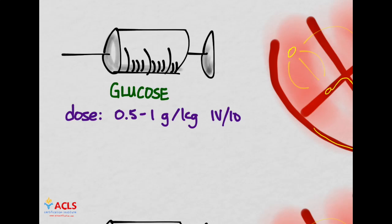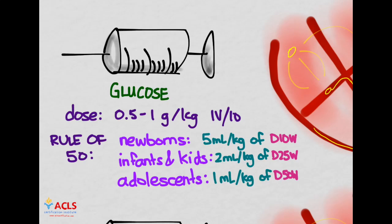The dose of glucose is 0.5 to 1 gram per kilo given IV or IO. There's an easier way to remember that called the Rule of 50s. You give a different dose based on whether they're newborns, infants, or adolescents. For newborns, 5 mLs per kg of D10 water. Infants and kids, 2 mLs per kg of D25 water. Adolescents, 1 mL per kg of D50 water.